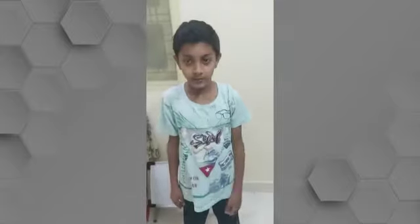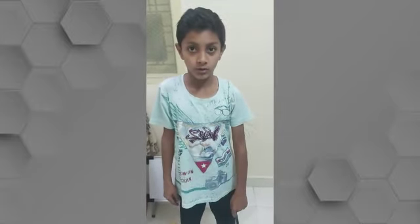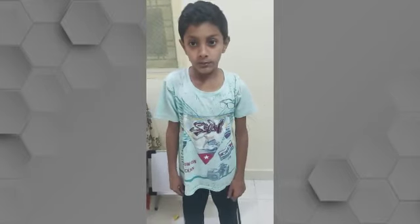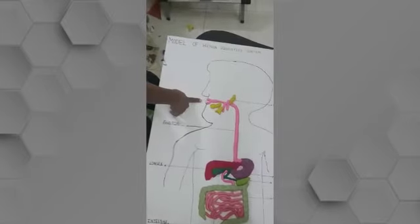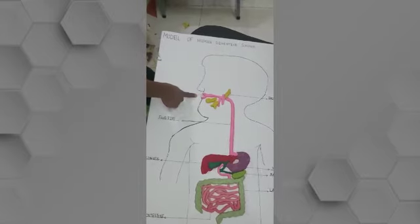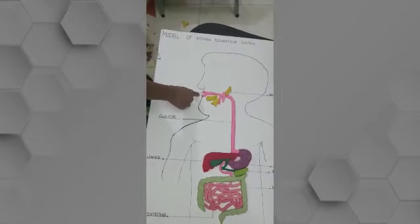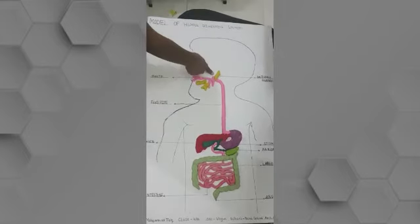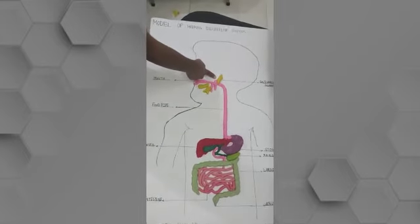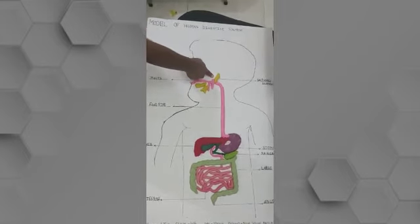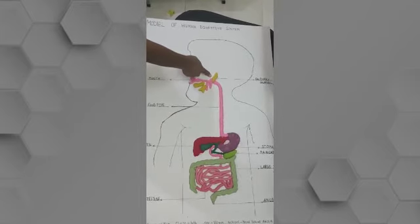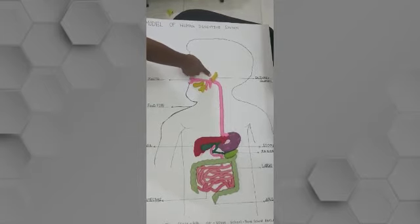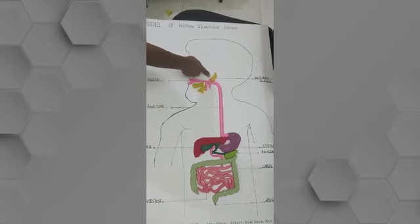My name is Mama Fike. I have made a model of the human digestive system. This is the mouth. Digestion of the food starts from the mouth. We chew and bite the food with our teeth. This is the salivary gland. The salivary gland secretes digestive liquid into the mouth. The food passes through the food pipe into the stomach.